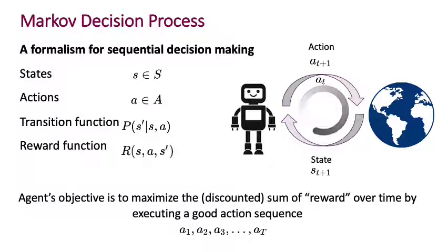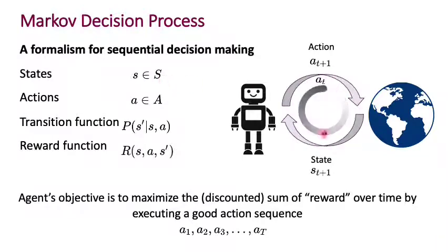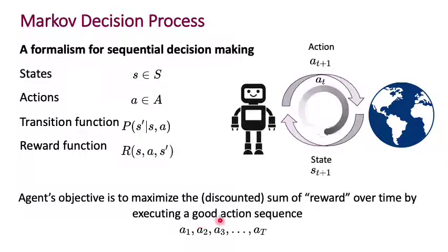You'll remember that we've spoken about Markov decision processes where an agent executes an action A_T belonging to a set of actions A, and then observes the state S from a set of states S. This process repeats over and over. The world transitions given a transition function — probability of S' given S, A — and there's a reward R of S, A, S' associated with every transition. The agent's objective is to maximize the discounted sum of reward over time by executing a good action sequence A1 through A_T, where T could be infinity.